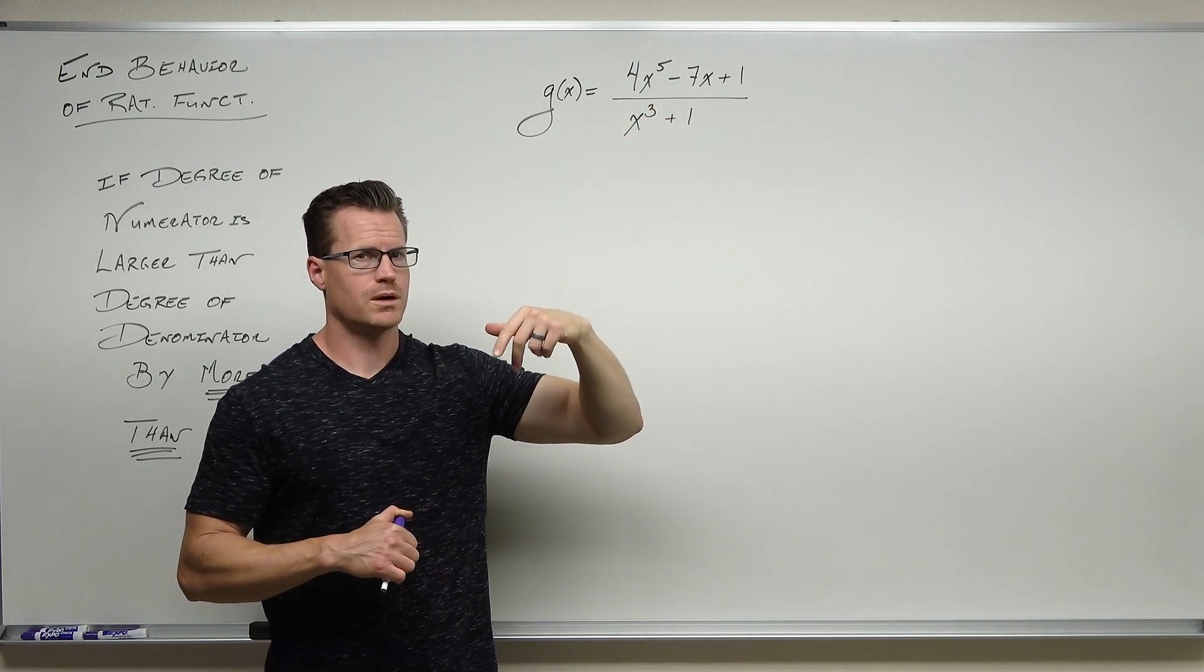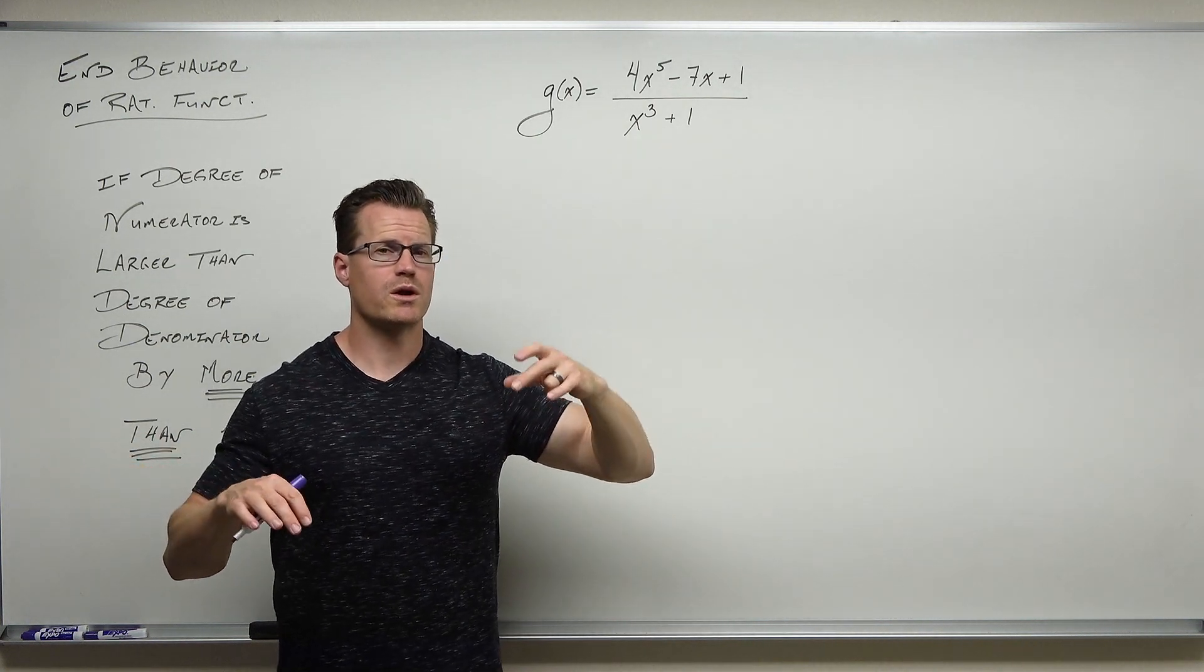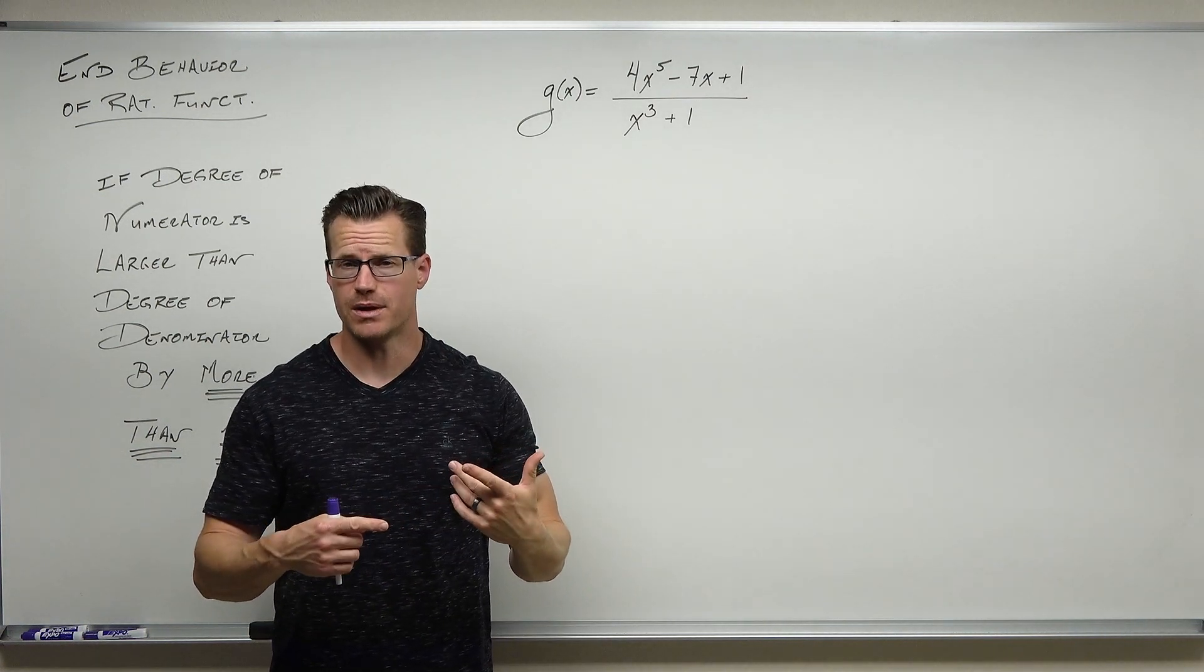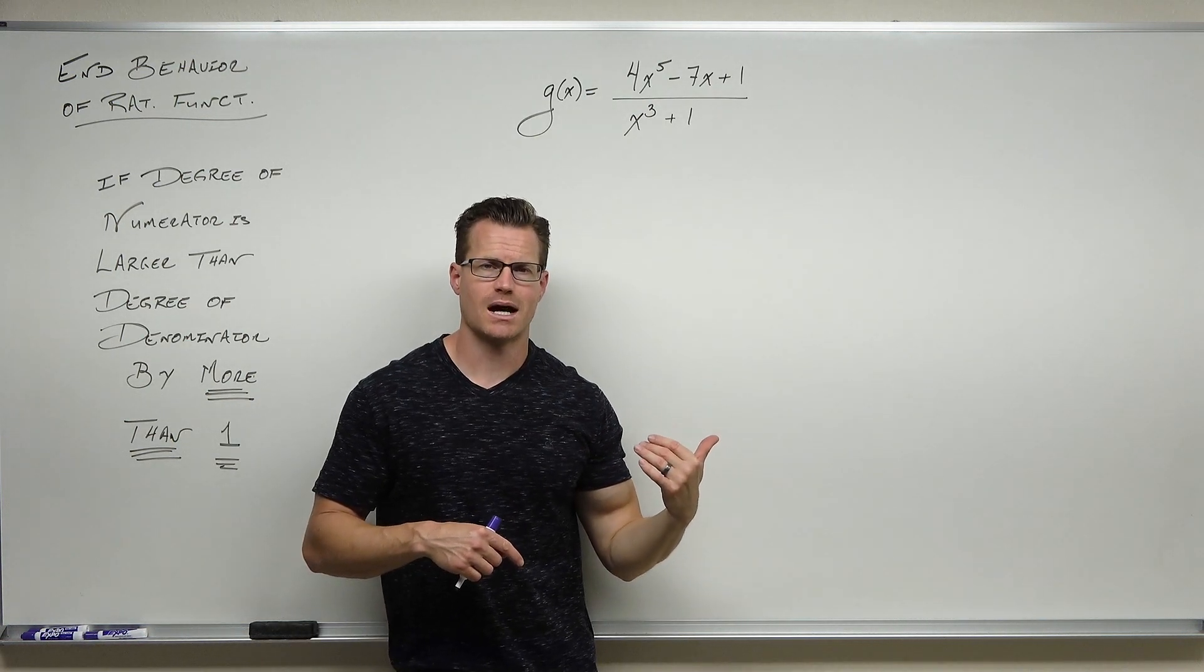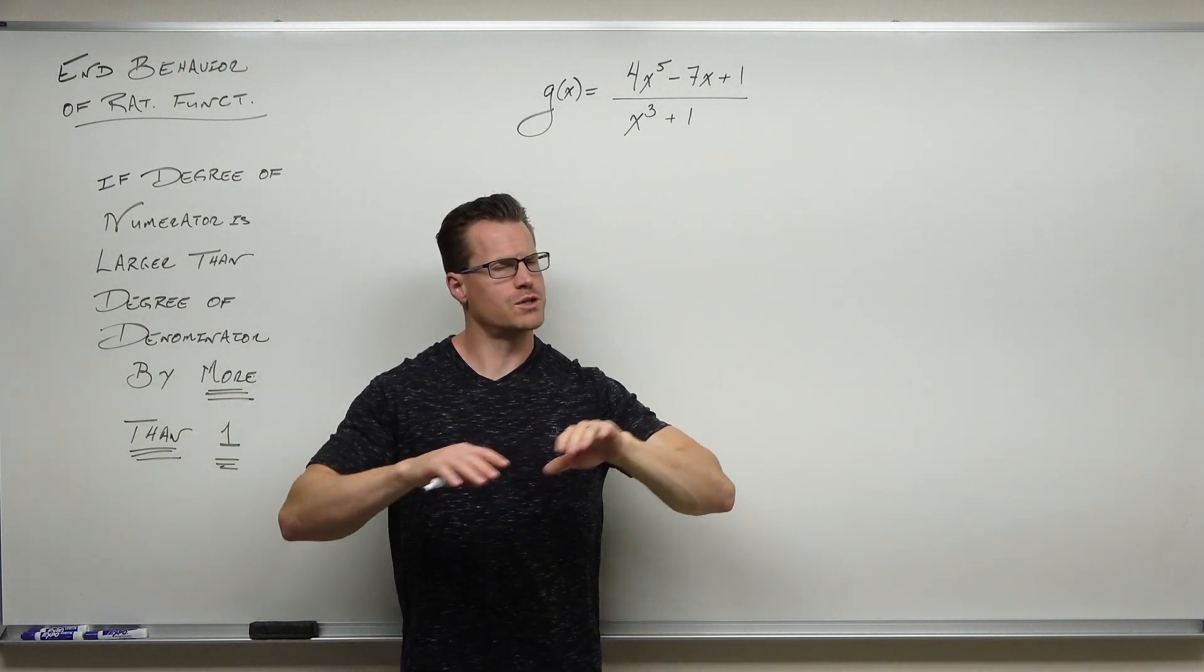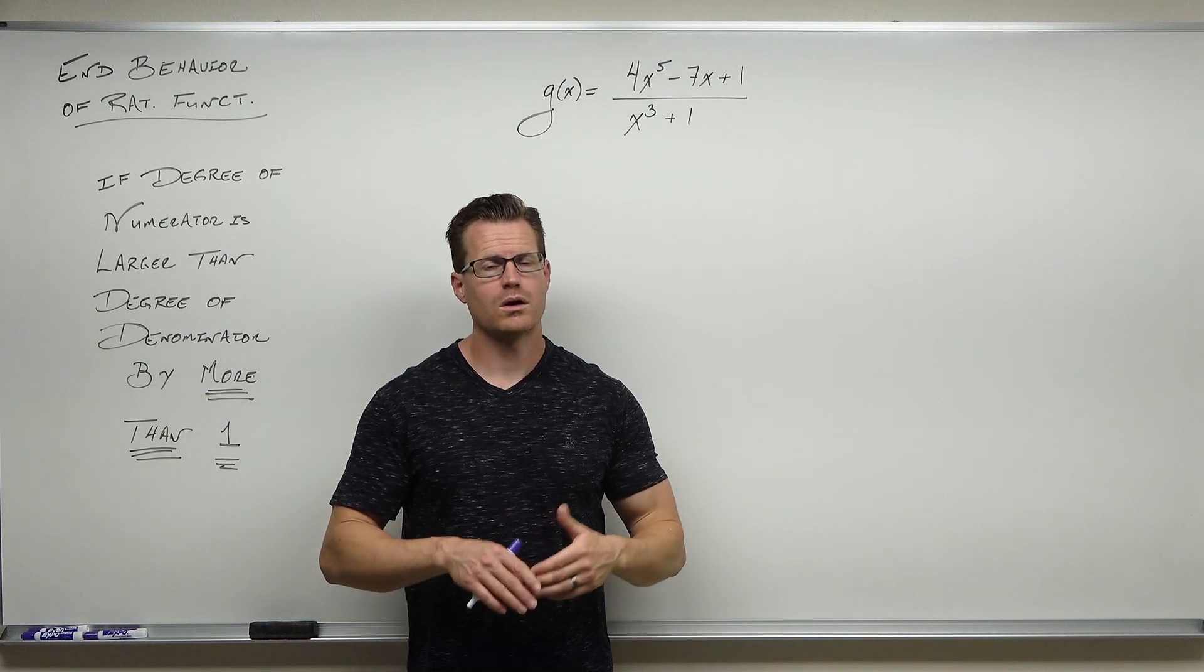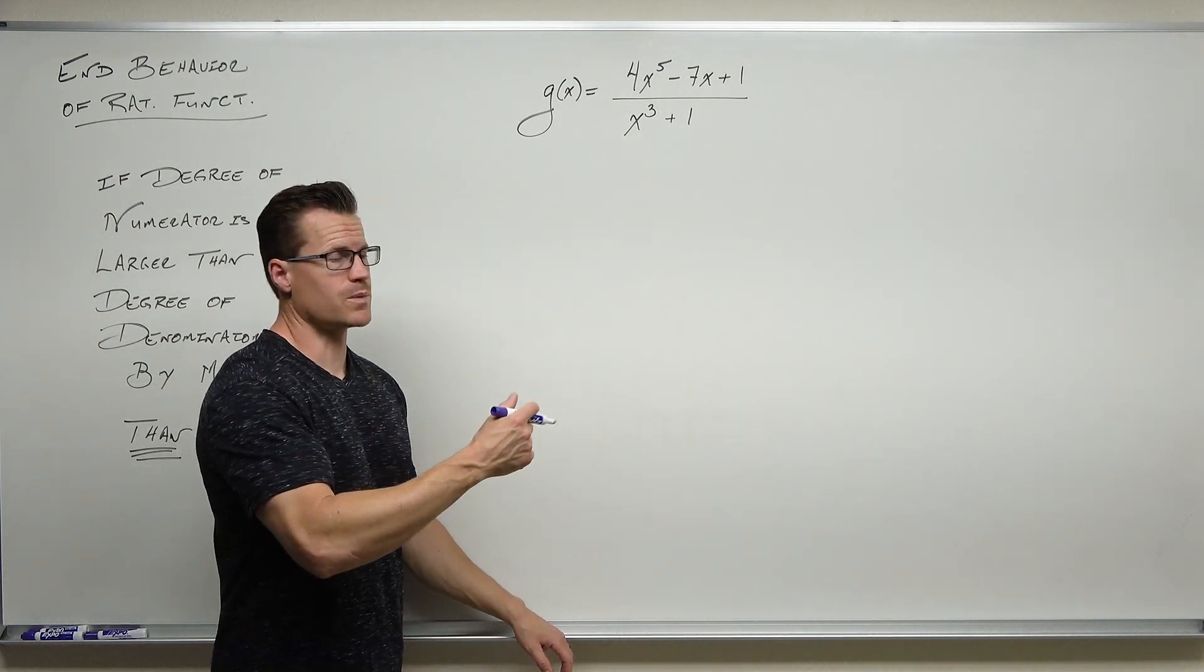So remember, denominator has to be bigger or equal for us to get horizontal. Numerator has to be bigger by exactly one for us to get oblique. More than that, we just have end behavior. So this degree is five. That degree is three. The numerator outpaces the denominator by more than one. So there is no horizontal. There is no oblique. We're just getting end behavior. Remember, you cannot have all of them. You're either horizontal or you're oblique or you have end behavior that's different from those things.